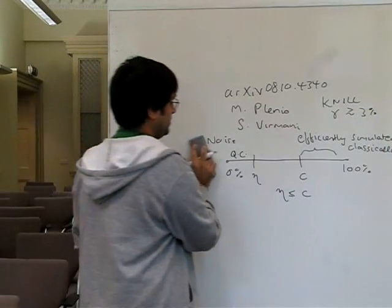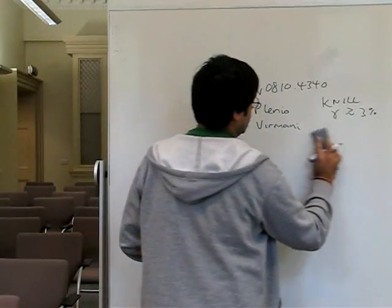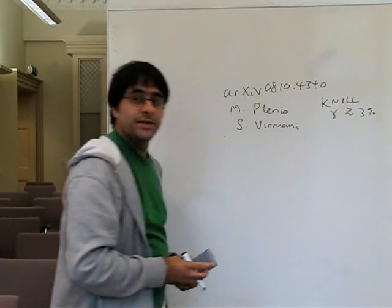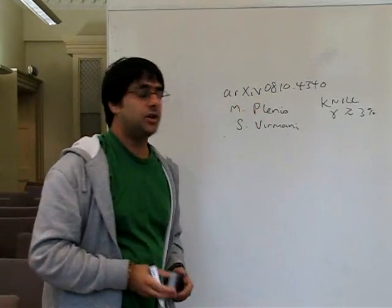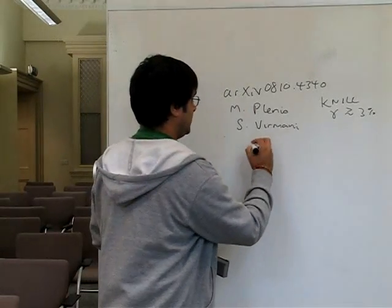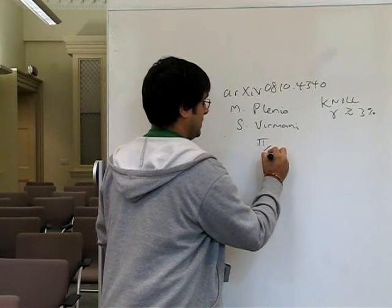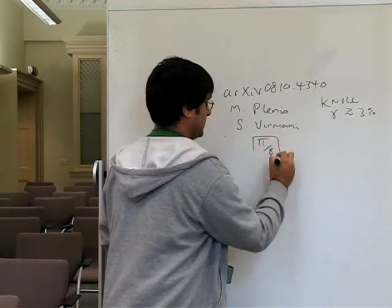What we do is utilize the fact that this scheme and actually many others have very specific structures. They bring universality to the computation by using a special resource, for instance, the so-called π/8 gate.